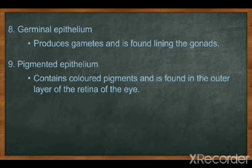The next is germinal epithelial tissue. Germinal means help in germination — the gonads produce gametes and it is found lining the gonads. Gametes are male gamete (sperm) and female gamete (ova). The last one is pigmented epithelium. As you know from the first chapter, chlorophyll is a pigment — pigment gives color. In our body, if any color is present, for example eye color or hair color, it is responsible — the pigmented epithelial tissue contains color. It is found in the outer layer of the retina of the eyes.